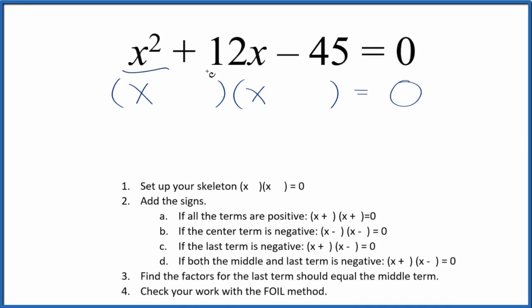Let's factor the equation x squared plus 12x minus 45 equals 0. The first thing we want to do is set up a skeleton equation. I've already done that here.